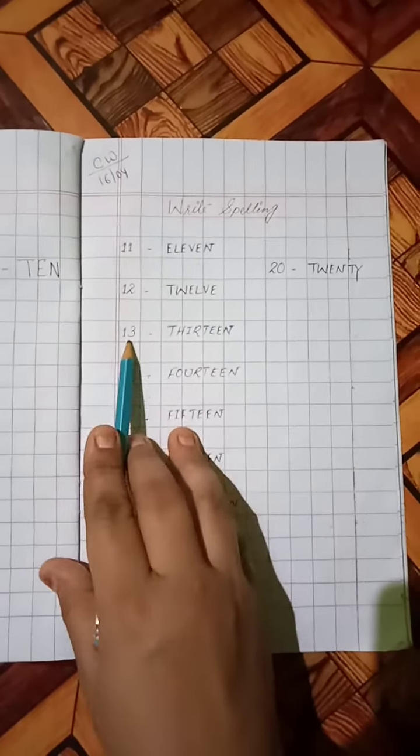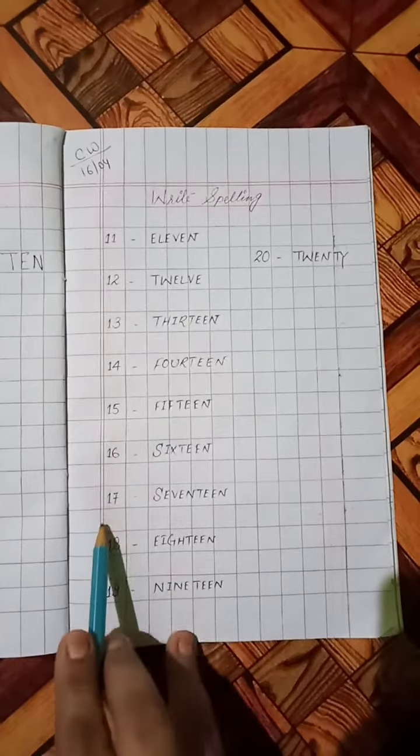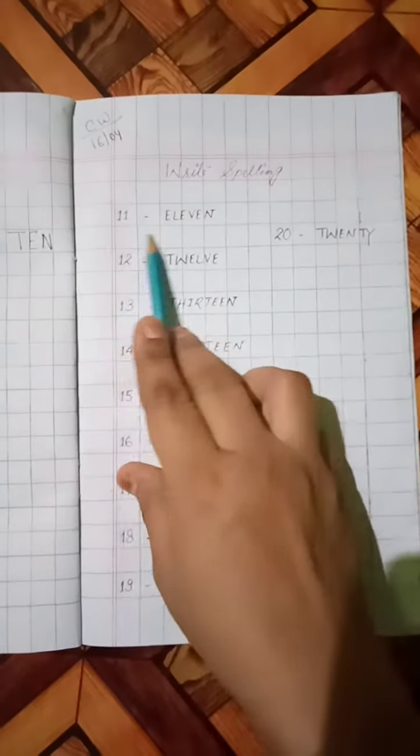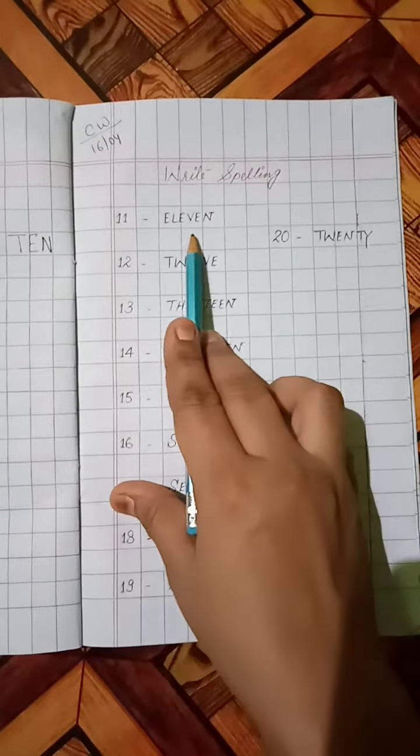Now we will start writing work here. You will write 11, 12, 13, 14, 15, 16, 17, 18, 19, 20, after that give hyphen, and now start to write the spellings.